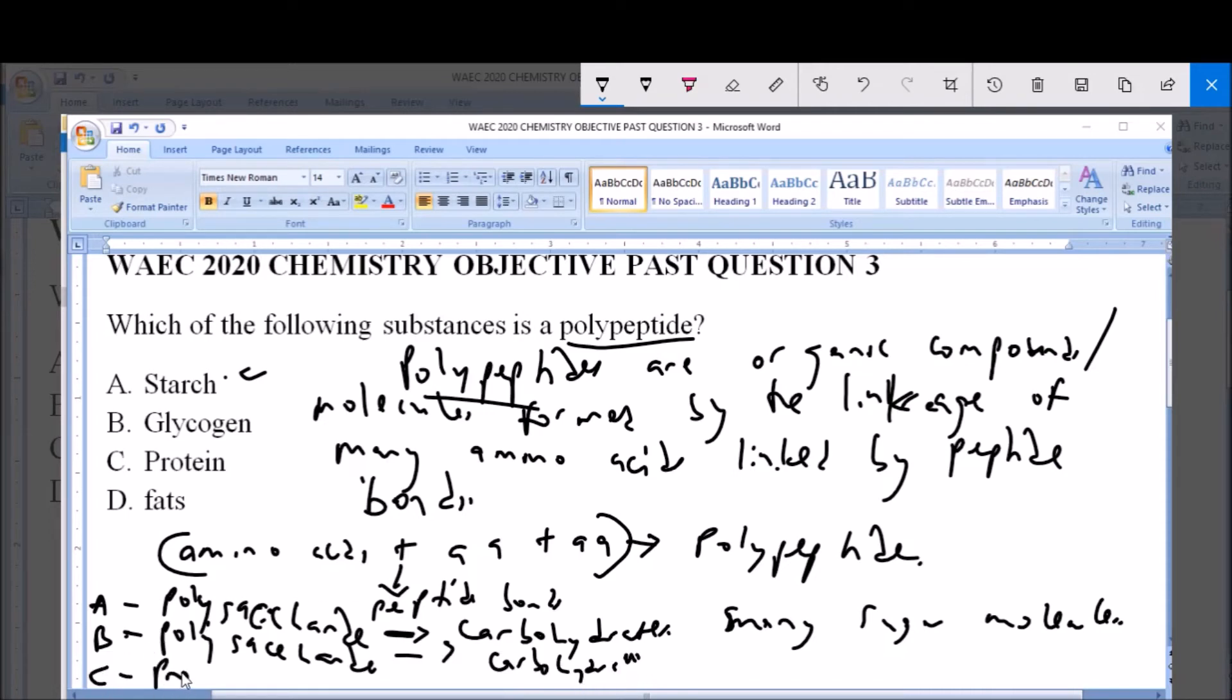Now option C, which is protein, is a polypeptide. Protein is the most popular type or example of polypeptides. Because proteins are basically made up of amino acids, and these amino acids are linked together by peptide bonds. So you have what is called a polypeptide or polypeptide chains.